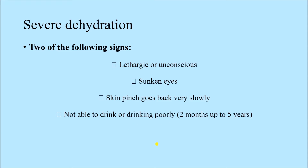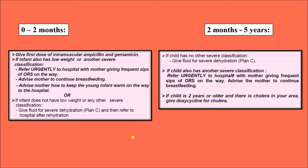In case of older children, that is 2 months to 5 years, if the child is not able to drink or is drinking poorly, this also indicates severe dehydration. As per the IMNCI guideline, classification is done based on age group: 0 to 2 months are young infants, and 2 months to 5 years is the older age group. In case of severe dehydration with low body weight or severe classification, we refer the child immediately to the hospital. On the way, frequent sips of ORS are given to prevent further dehydration, the child should be continuously breastfed, and kept warm to prevent hypothermia.